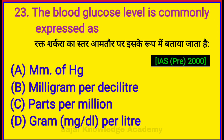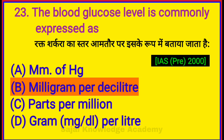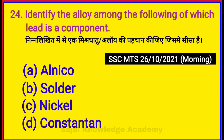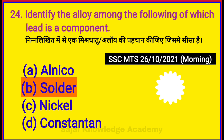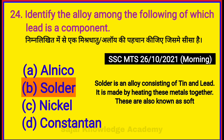The blood glucose level is commonly expressed as? Option B: Milligram per deciliter. Identify the alloy among the following of which lead is a component. Answer B: Solder.